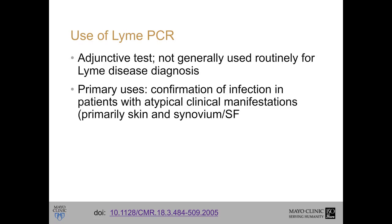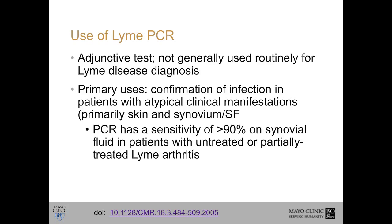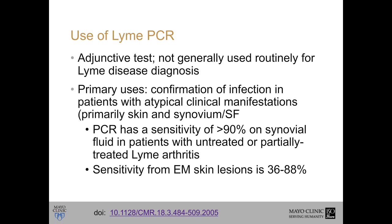PCR is therefore used as an adjunctive test, not routinely as part of Lyme disease diagnosis. It's good for confirming infection when you have atypical clinical manifestations. The primary specimen types tested are skin biopsies and synovial fluid or synovium tissue, where PCR has relatively good sensitivity — greater than 90% on synovial fluid for untreated or partially treated Lyme disease, and 36 to 88% in skin lesions from erythema migrans.